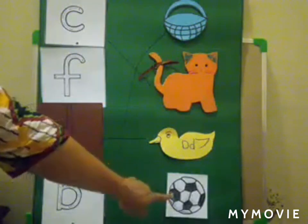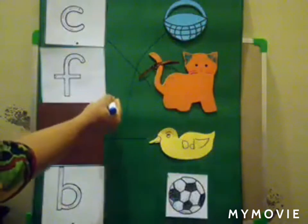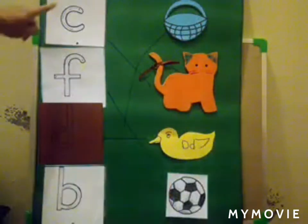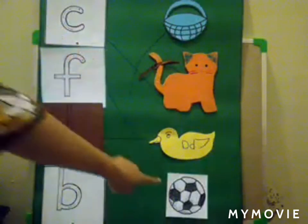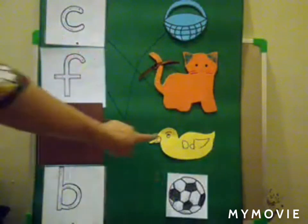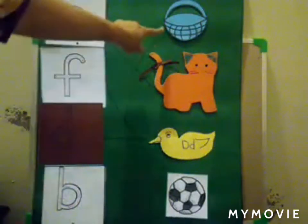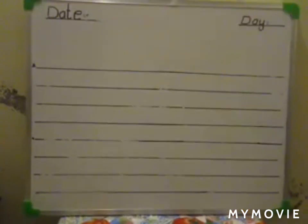Good. Very good. F — football. D — duck. Now, we are going to write A to H on the board. So, let's start.